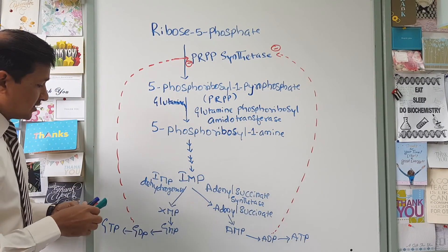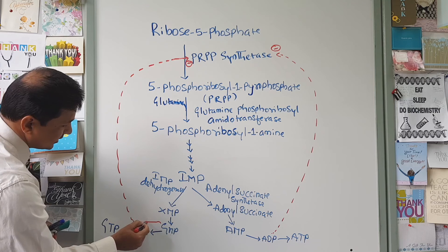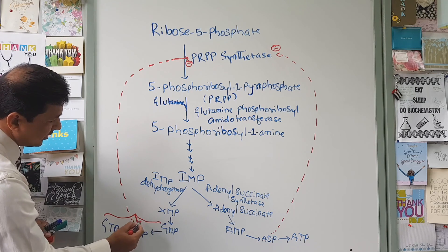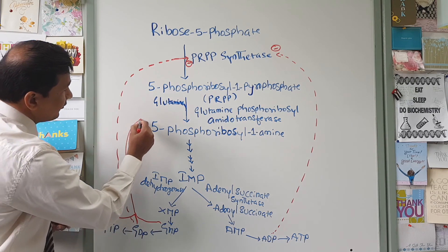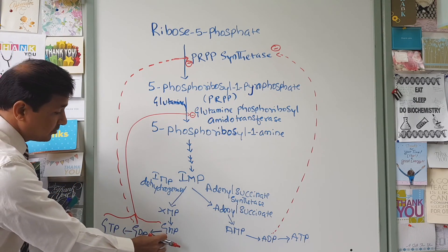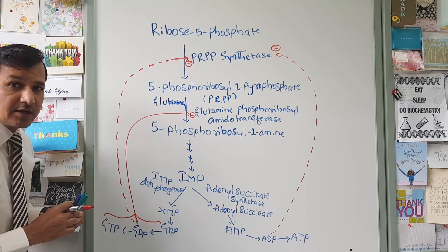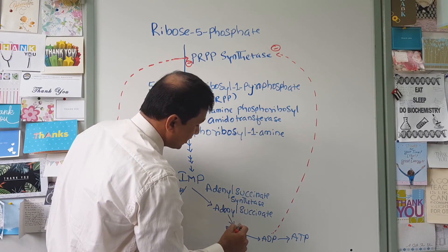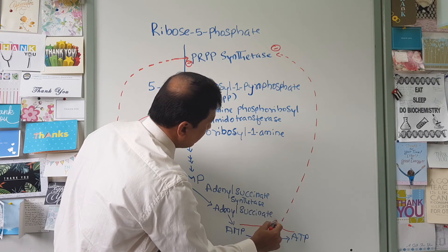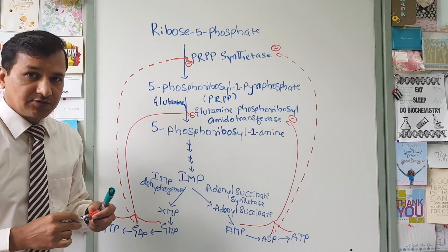Whenever GMP, GDP, and GTP accumulate, all three have a negative effect on glutamine phosphoribosyl amidotransferase. In the same way, accumulation of AMP, ADP, and ATP — all three — also have a negative effect on glutamine phosphoribosyl amidotransferase. So all 6 molecules inhibit this enzyme.